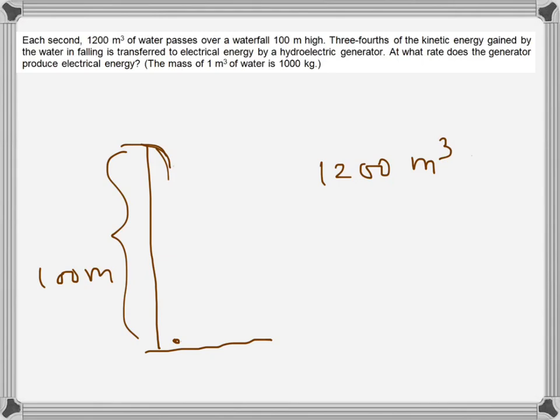So the water comes with a potential energy and that potential energy is converted into kinetic energy. So we first need to find that potential energy. If we say PE or U, that will be mgh.